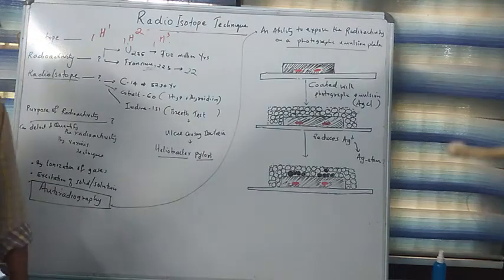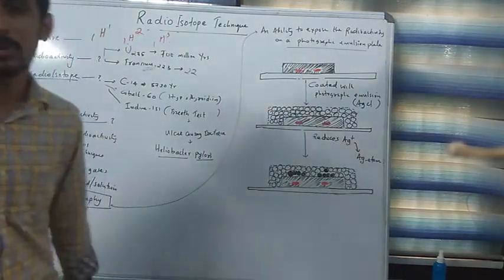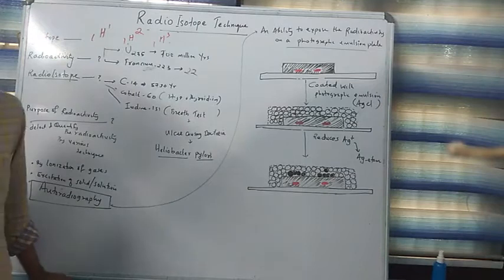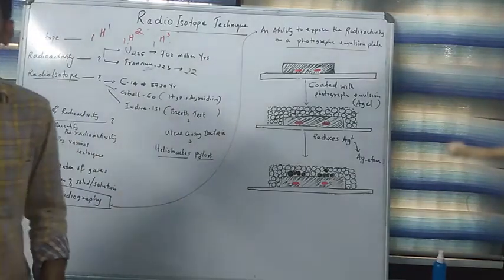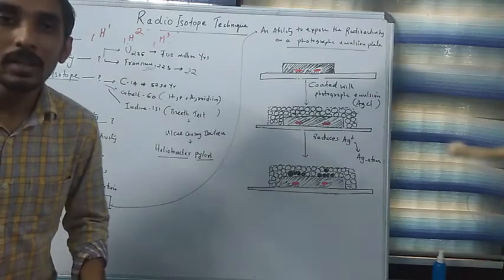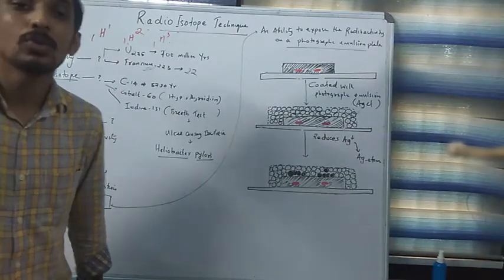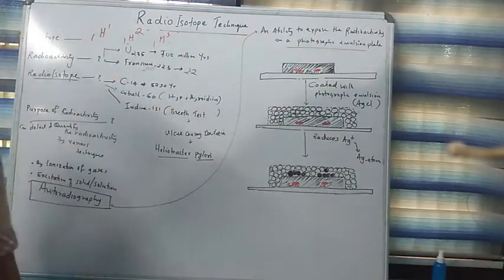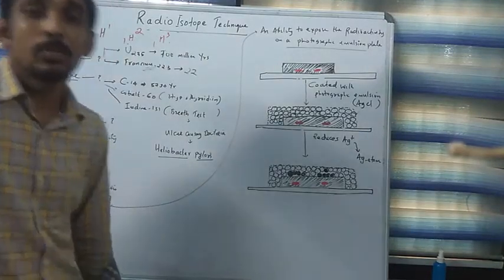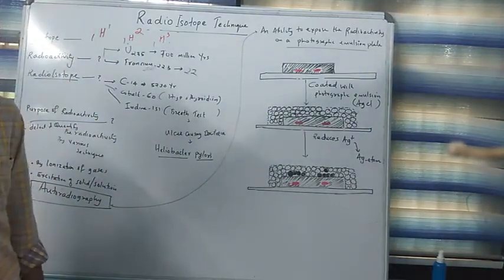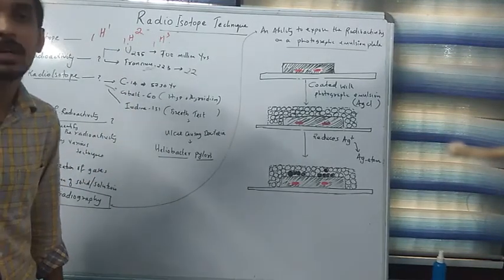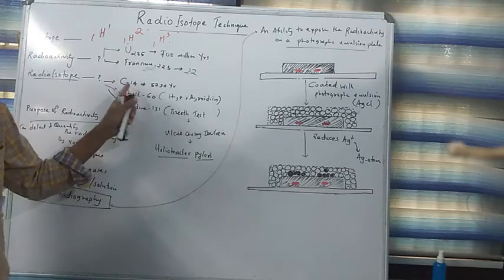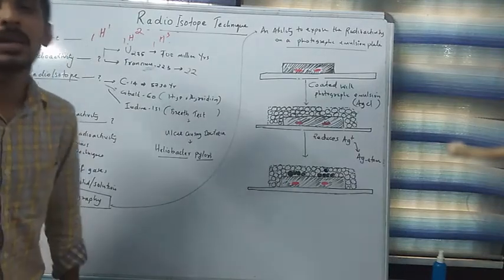Now we have to study what is a radioisotope. We already studied what is an isotope and what is radioactivity. Now we can study what is a radioisotope. A radioisotope is an isotope showing the property of radioactivity. Let's take an example: carbon-14. Carbon-14 is an isotope of carbon showing radioactivity. It is not an ordinary carbon-12 — it is carbon-14, and it is an example of a radioisotope.